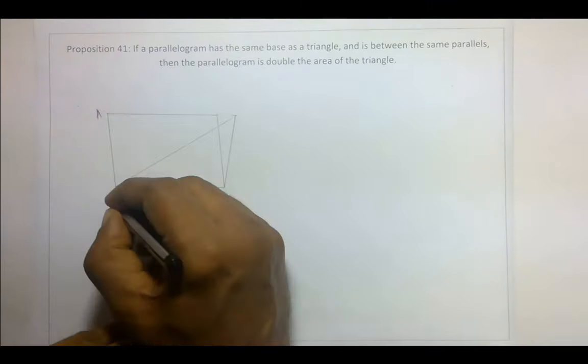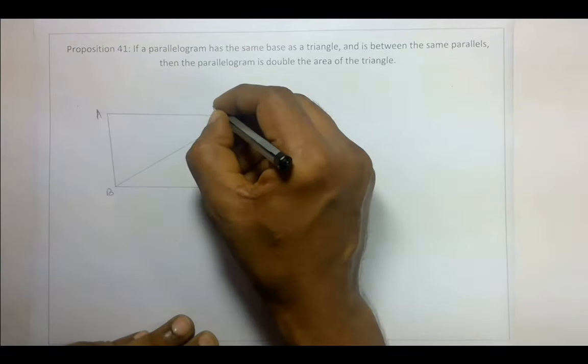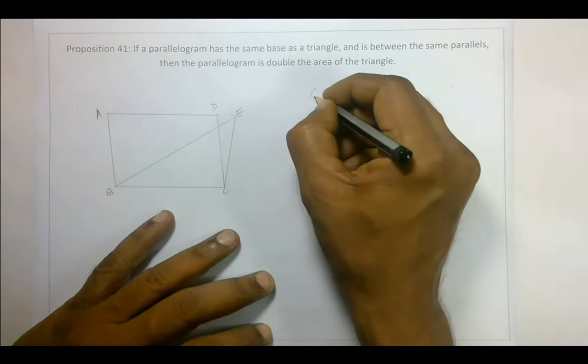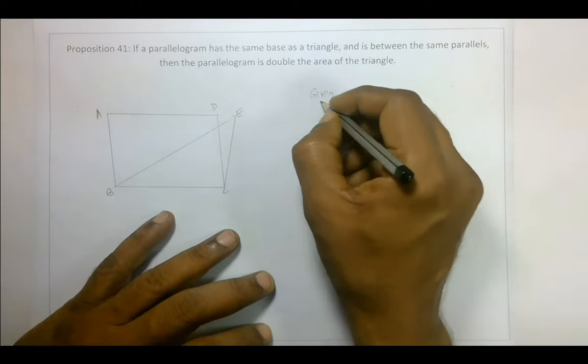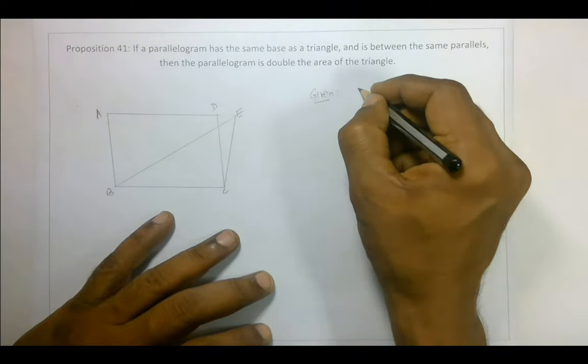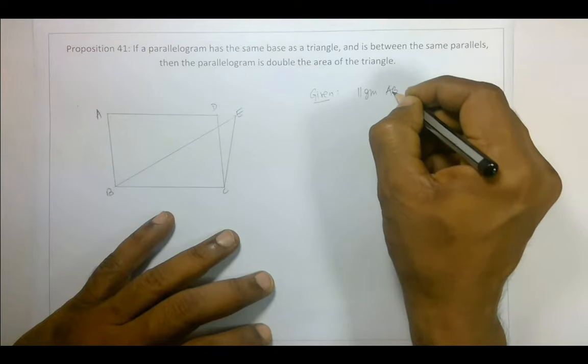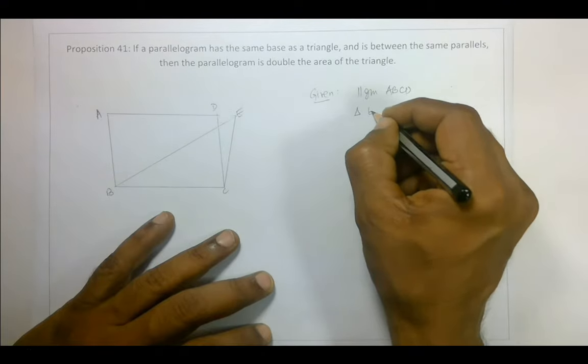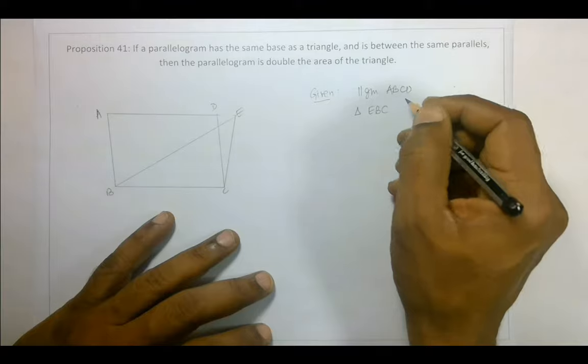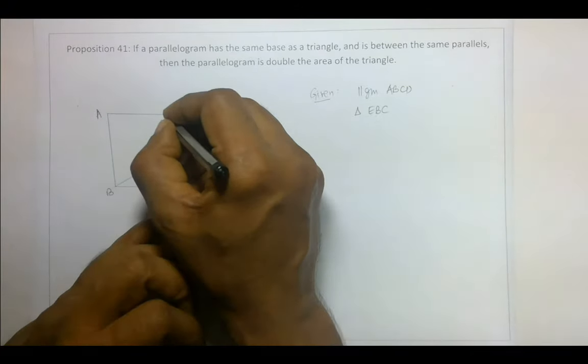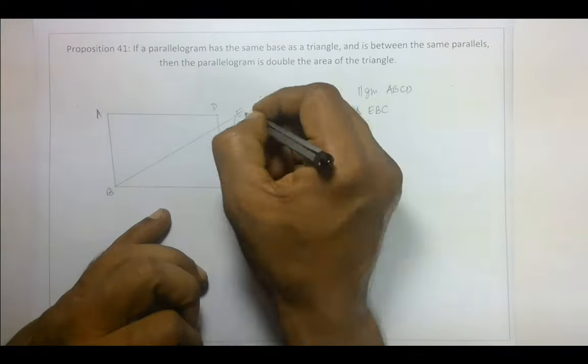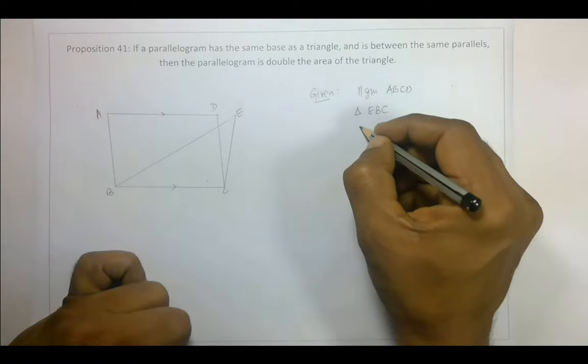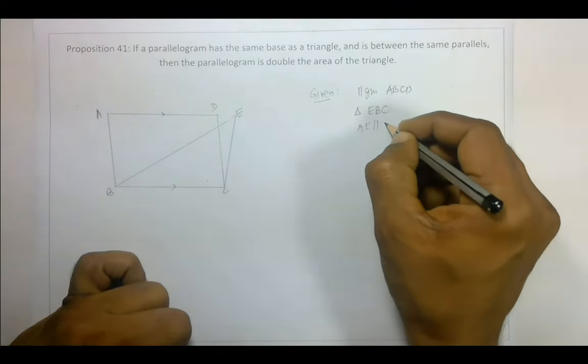We have parallelogram ABCD and triangle EBC. Now what is given? We are given a parallelogram ABCD and a triangle EBC, and we are told that AE is parallel to BC. AE is parallel to BC, and these two are on the same base.